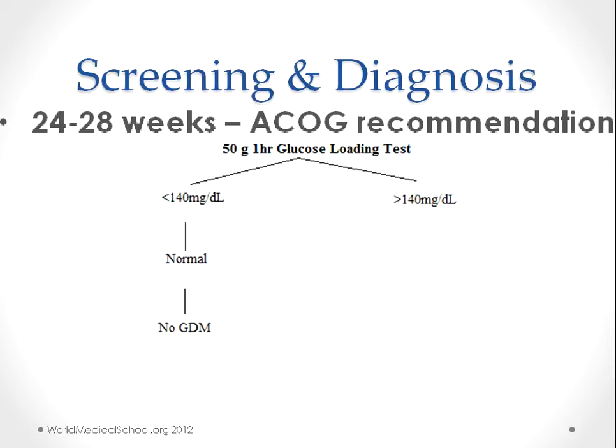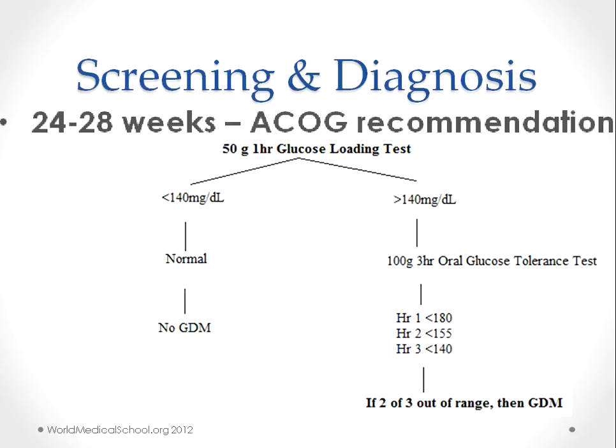However, if the result is greater than 140, you have to do an oral glucose tolerance test, which is done by giving 100 grams of glucose and measuring blood sugar after the first, second, and third hour. If any two of the three values are out of range, then they have gestational diabetes mellitus.